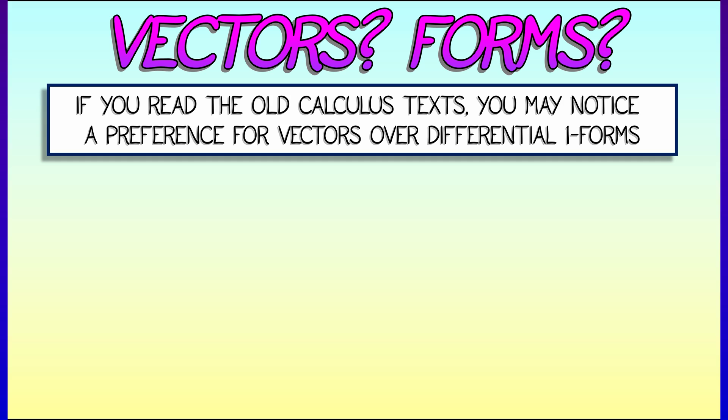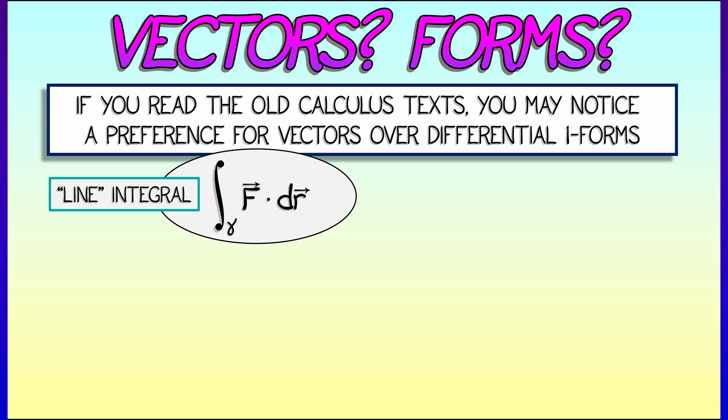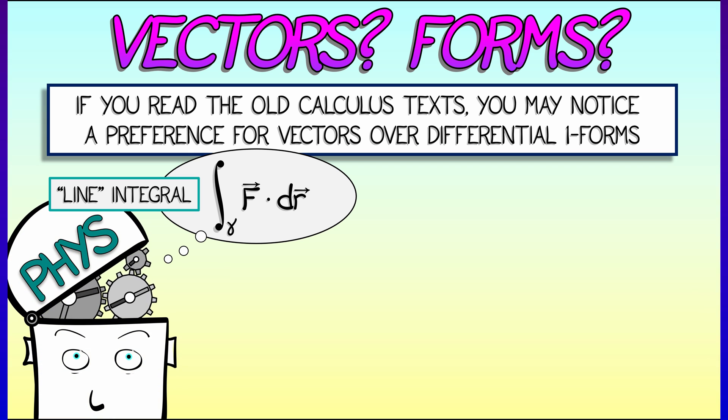Instead of one-forms, you're going to see things like the integral of f dot dr, where f is your vector field, and r is a position vector, and dr is kind of like a vector of differentials. They'll call these line integrals, even when you're integrating over a curvy sort of path. This is the way people in physics tend to denote these, and the old calculus books written from a physics perspective use that notation.